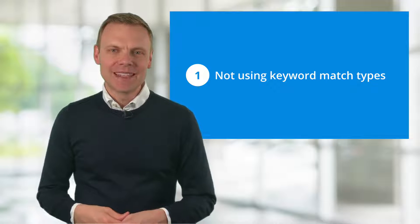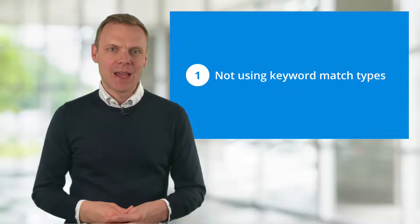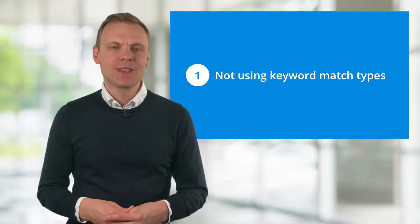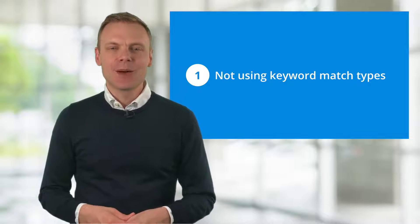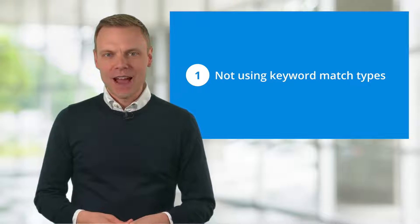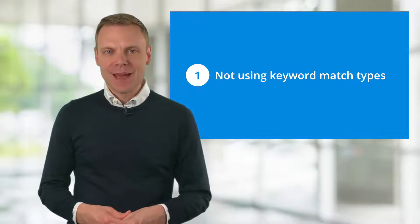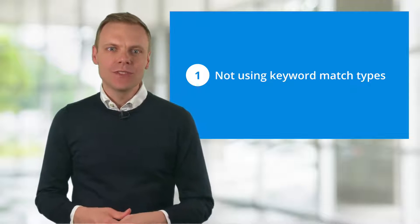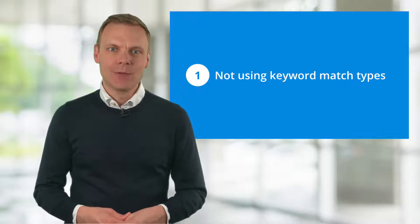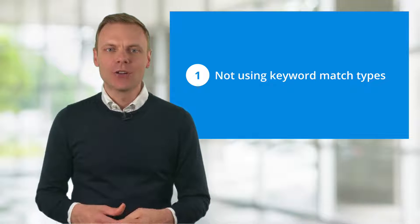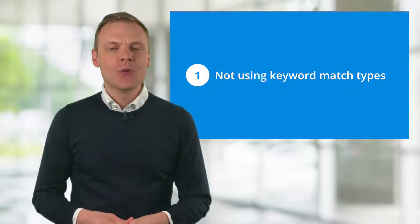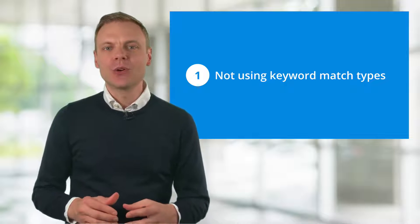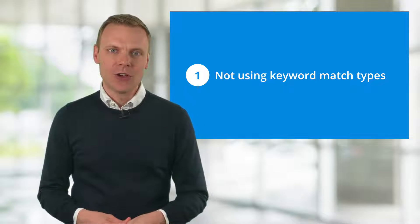Mistake number one is not using keyword match types. There are five main keyword match types that you need to be aware of. These are broad match, broad match modified, phrase match, exact match, and negative match. If you're just using broad match keywords, then your ads will be displayed on a wide range of keywords, which means you'll need lots of negative keywords to ensure your ads appear for the most relevant terms.